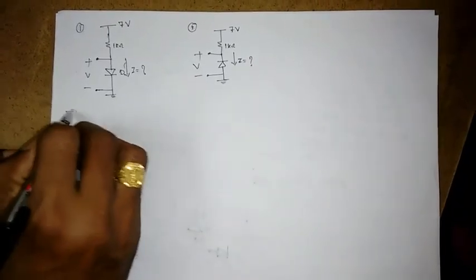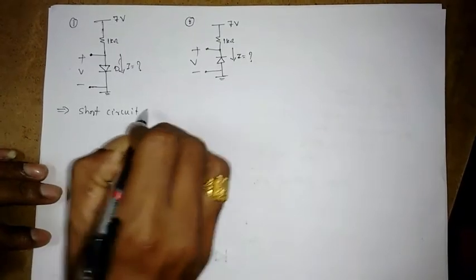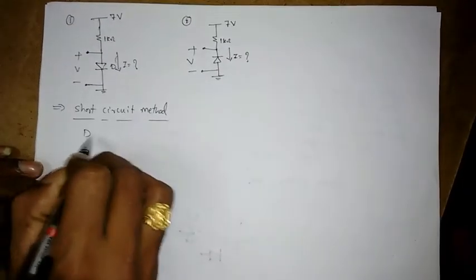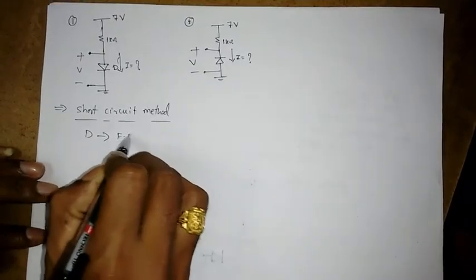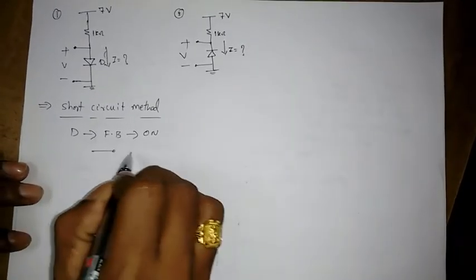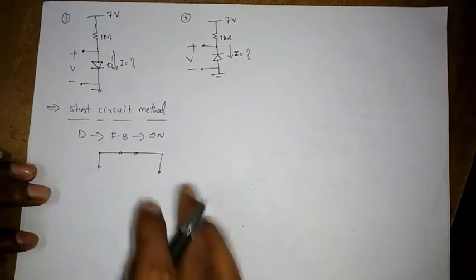Now what is this short circuit method? So short circuit method is, we will assume that diode D is in forward bias or it is on. Whenever it is on,